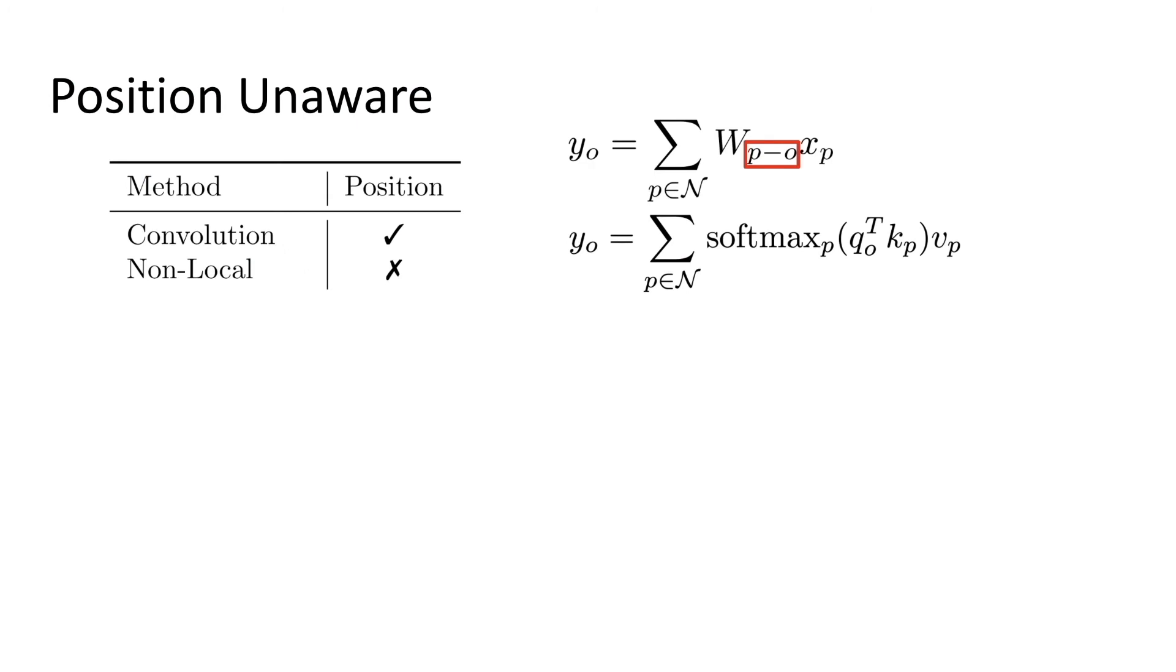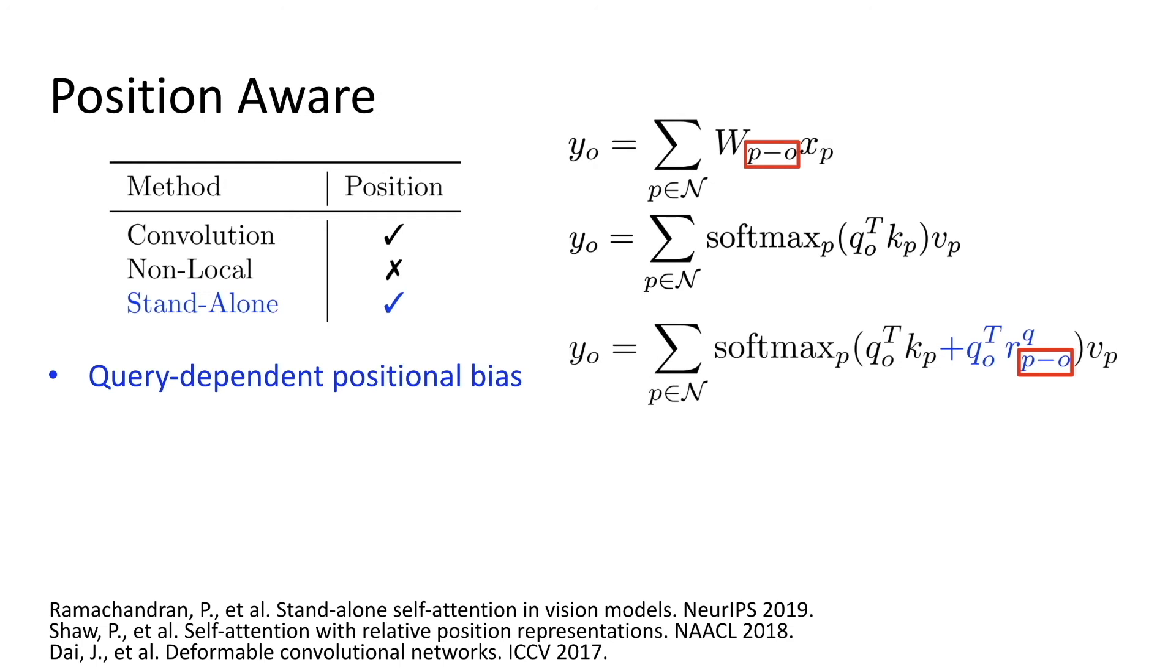Although this non-local operation can aggregate global context, it has no idea where the context comes from. It throws away spatial orderings or structures of the pixels in the receptive field. This is not what we desire. Note that convolution is able to keep such spatial structures because its kernel weight depends on the relative position of the two pixels. A similar idea has been used in self-attention. People propose relative positional encoding, R, which is a vector that indicates the relative position of two pixels. It could either be fixed or learnable, but it should be at least different when the relative position is different. Then, this blue term computes the compatibility of the query Q with the position R, so that the query can choose which value to retrieve based on its relative position. It models a query-dependent positional bias. This relates to deformable convolution which learns the offset or relative position of convolution.